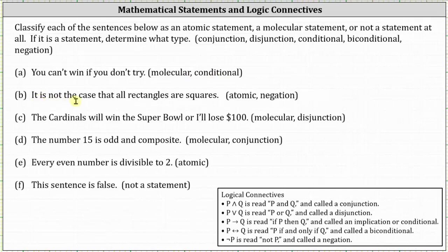B, it is not the case that all rectangles are squares. This is an atomic statement that is also a negation. C, the Cardinals will win the Super Bowl or I'll lose one hundred dollars. This is a molecular statement because it's made up of two statements and it's a disjunction because of the or.